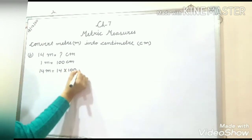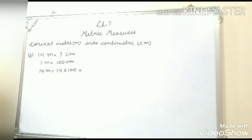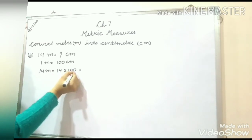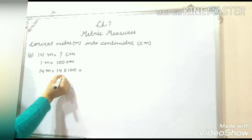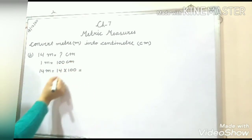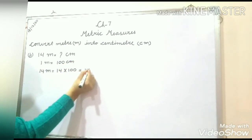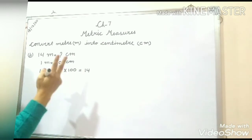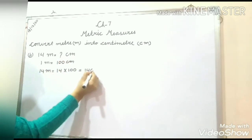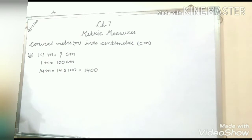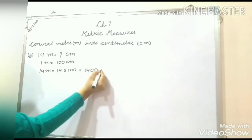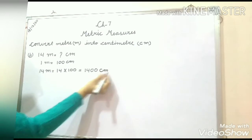Using the trick: you write 14 and after that how many zeros are in 100? That is 2 zeros. So after 14 you put 2 zeros, and it becomes 1400. So 14 meter equals 1400 centimeter.